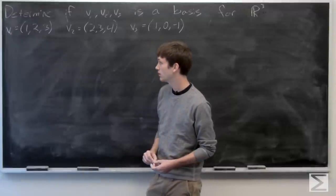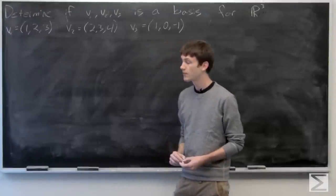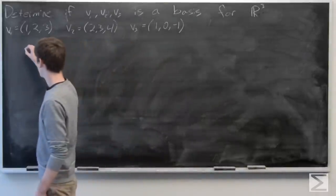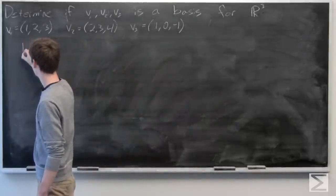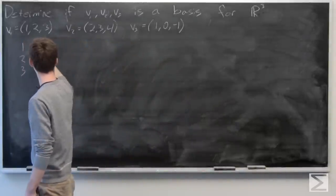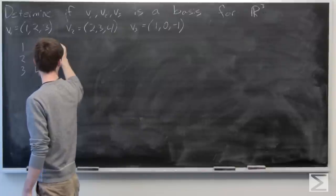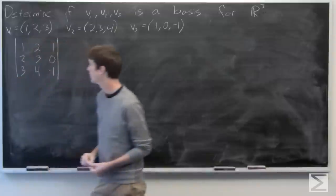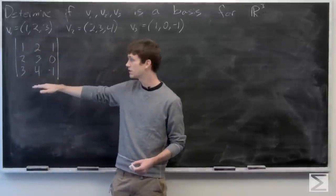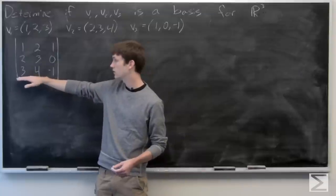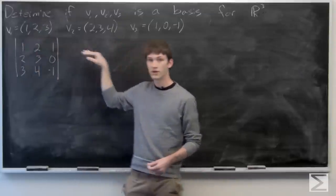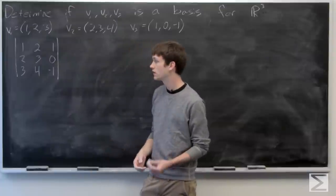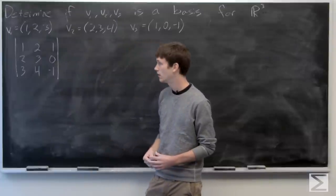So we'll go ahead and just prove that these three are linearly independent. And we'll do that by using from the previous chapter the fact that if the determinant of the matrix whose columns are the vectors v1, v2, and v3, if our determinant of that matrix is non-zero, then our vectors are linearly independent.